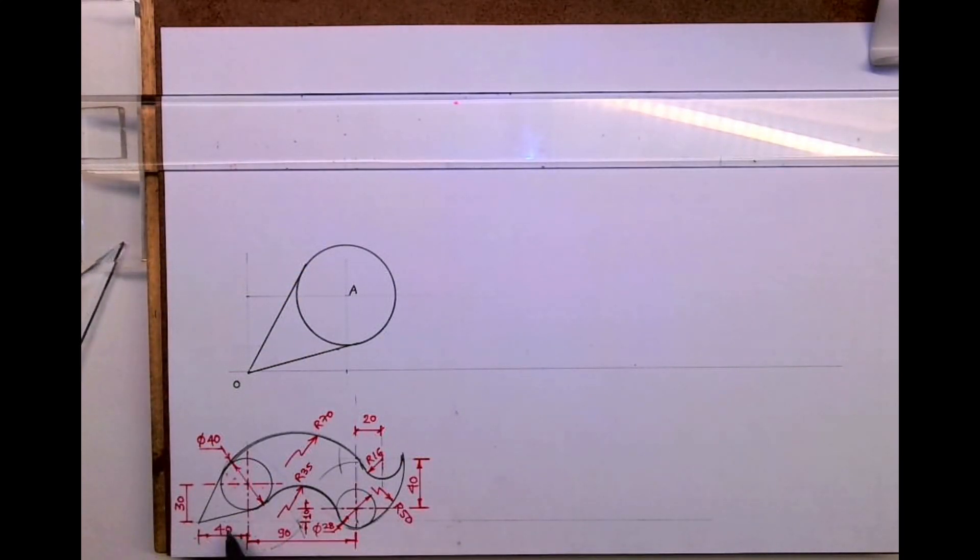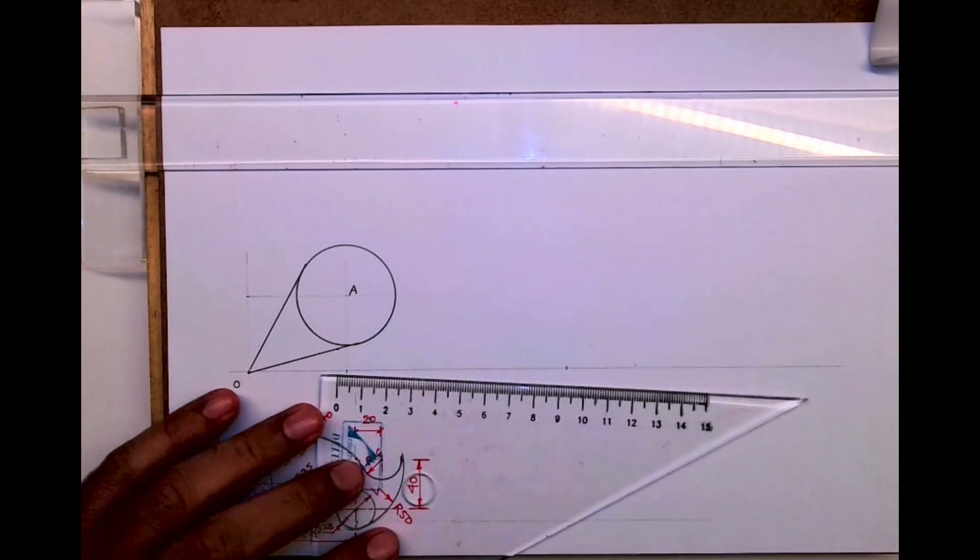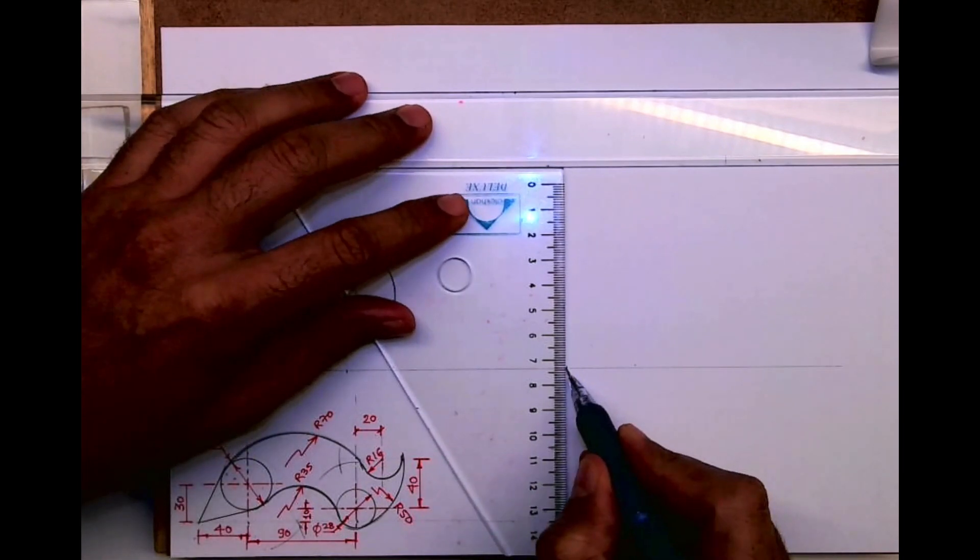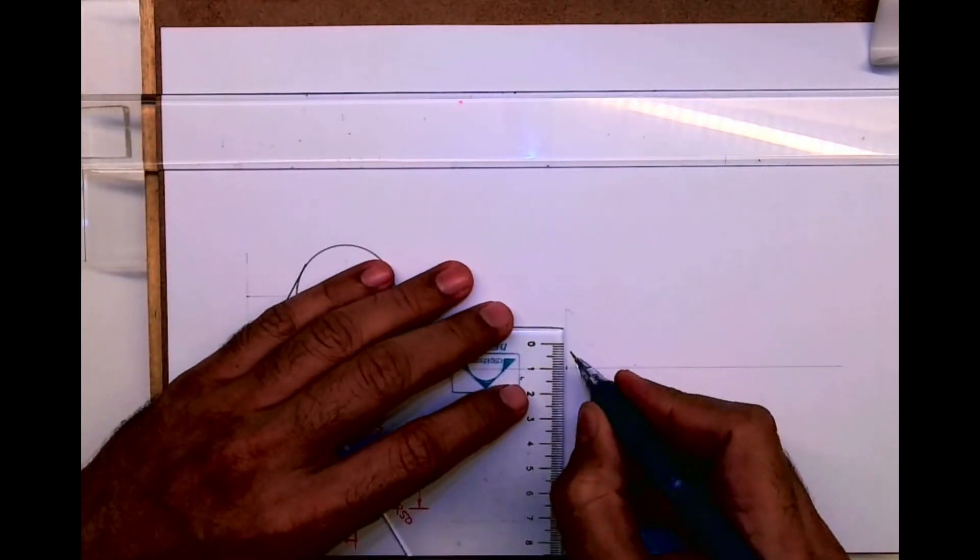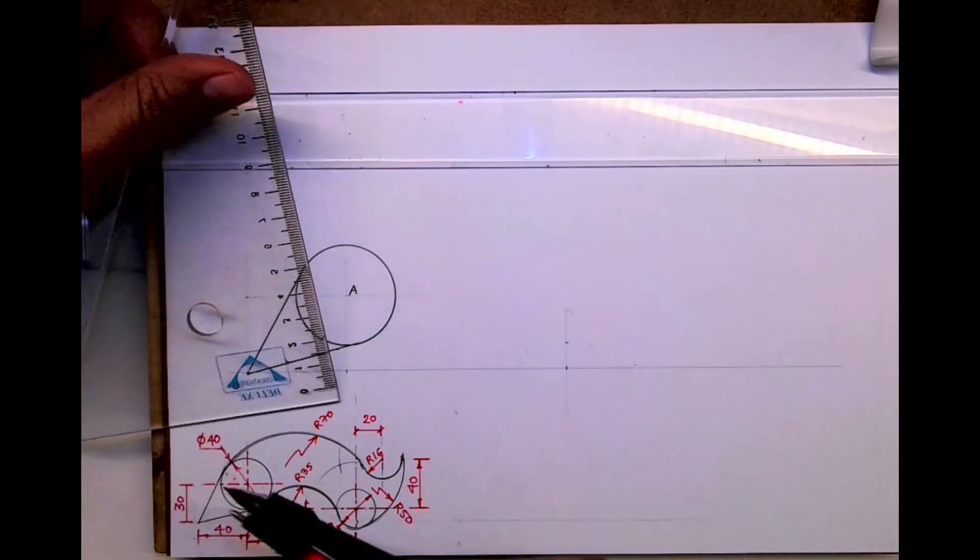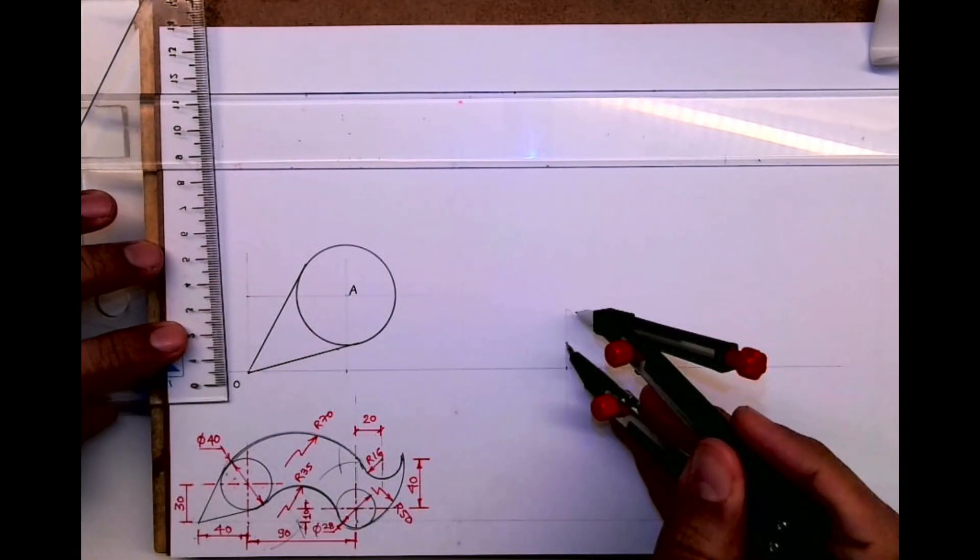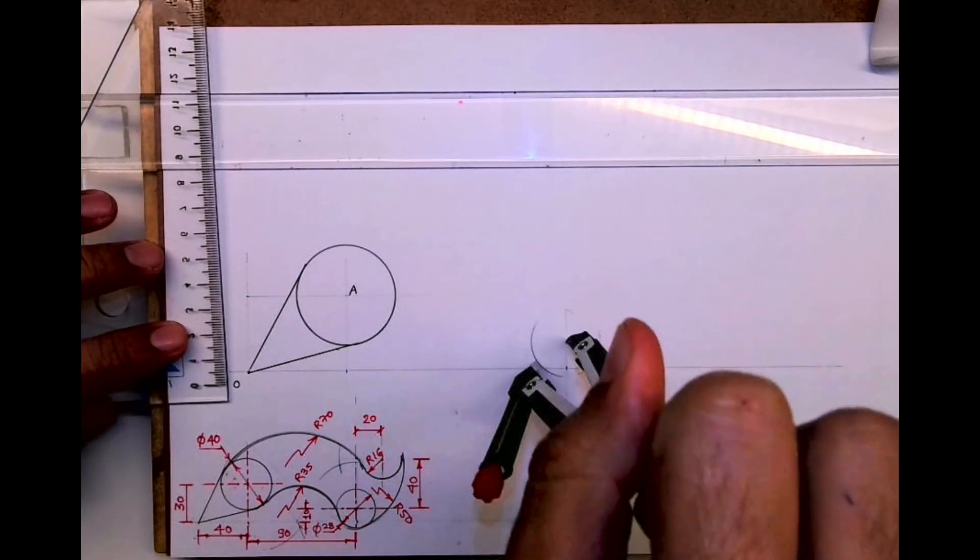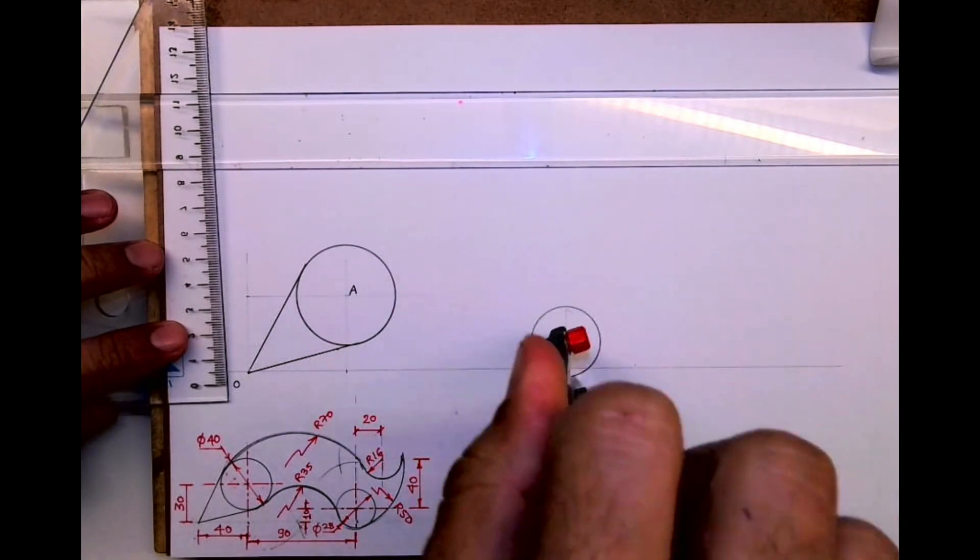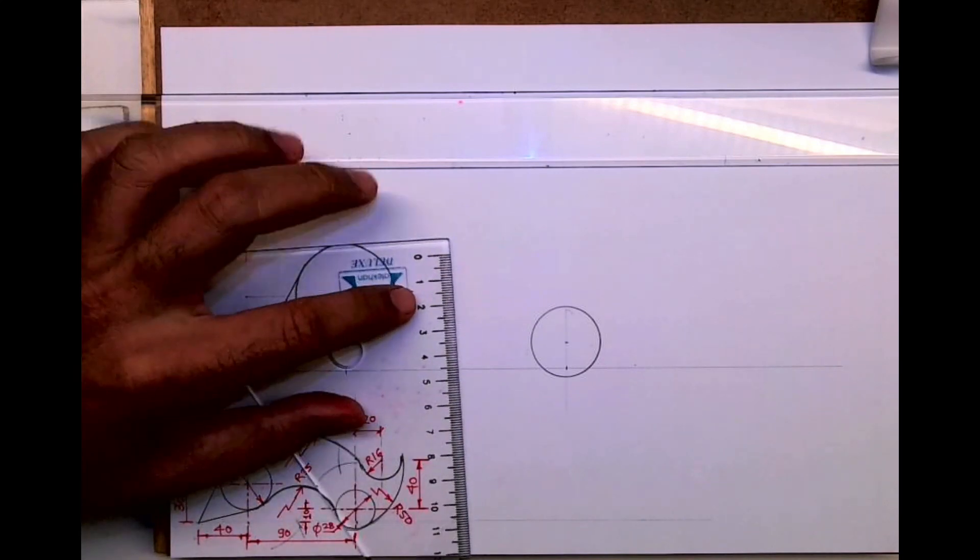Now if you see, this is 90 and height is 10. So from here we'll take 90, and height is 10. And we'll draw this radius 14.